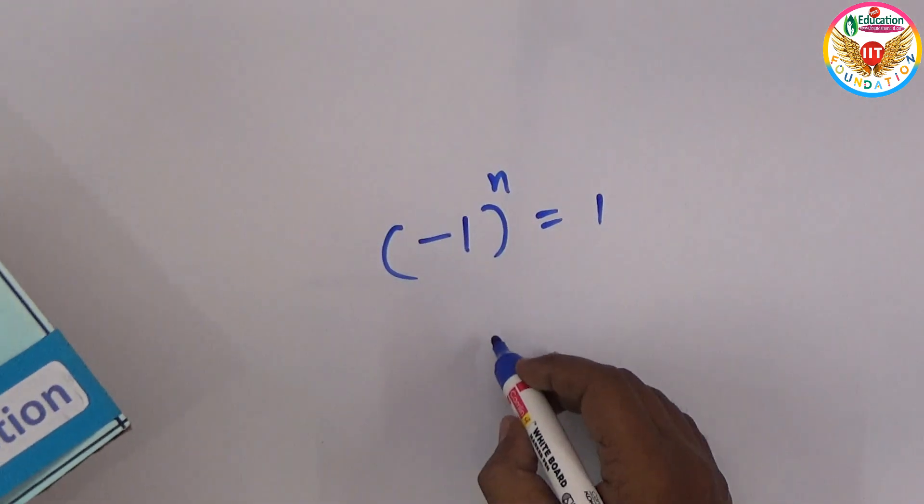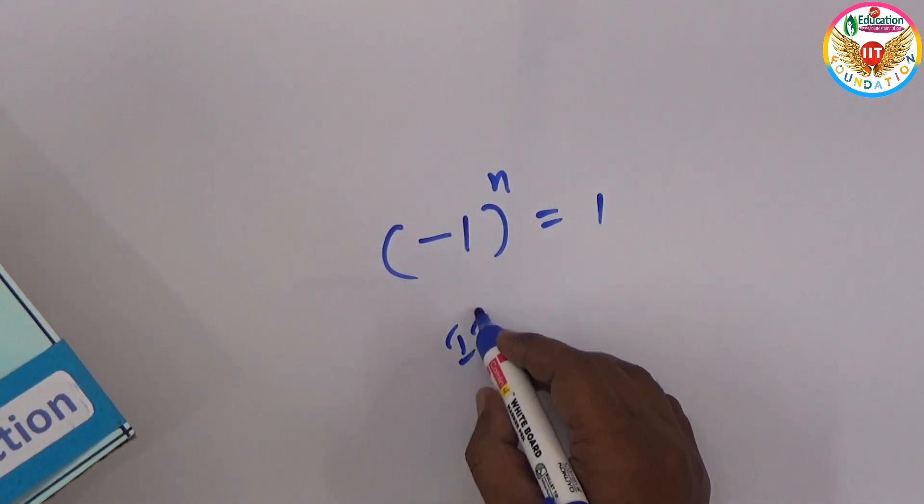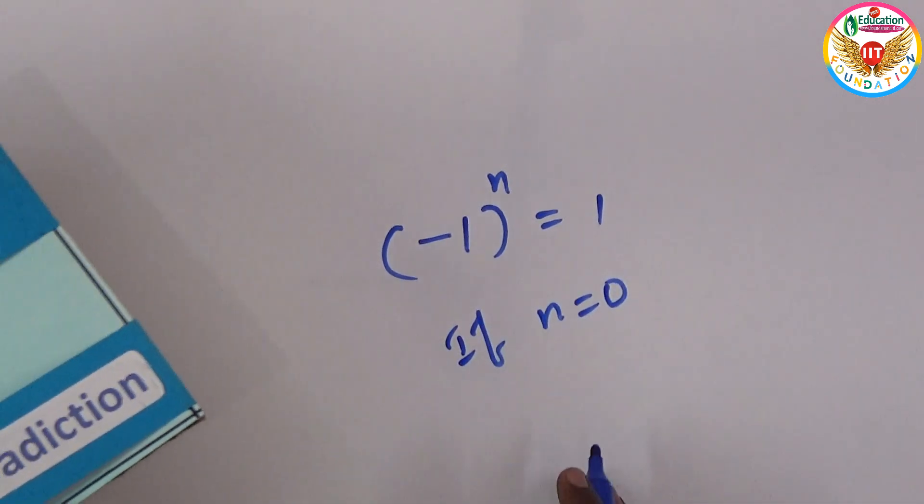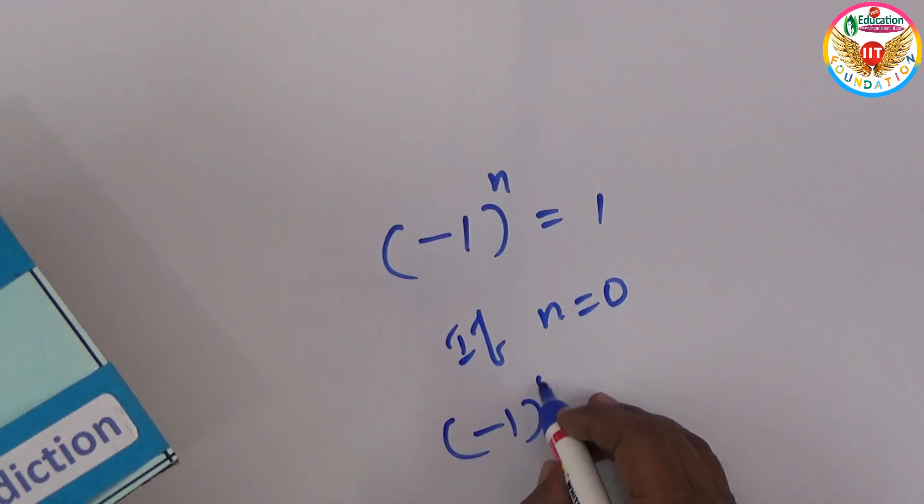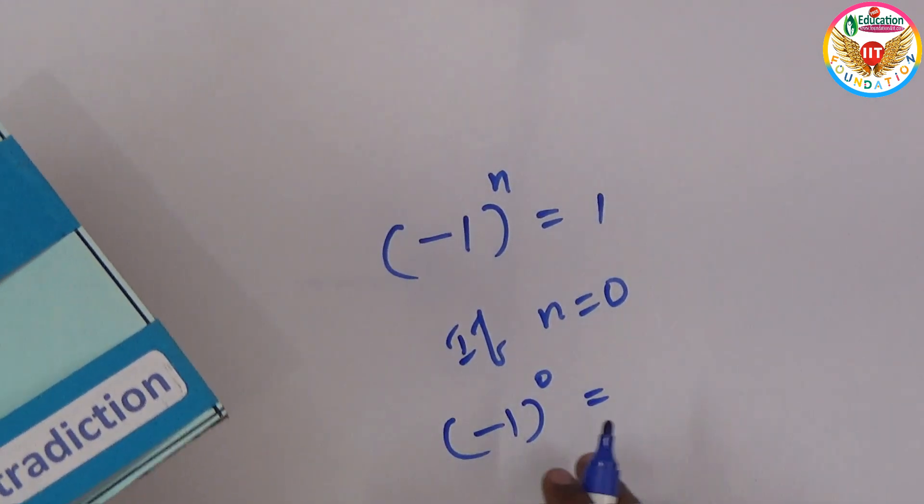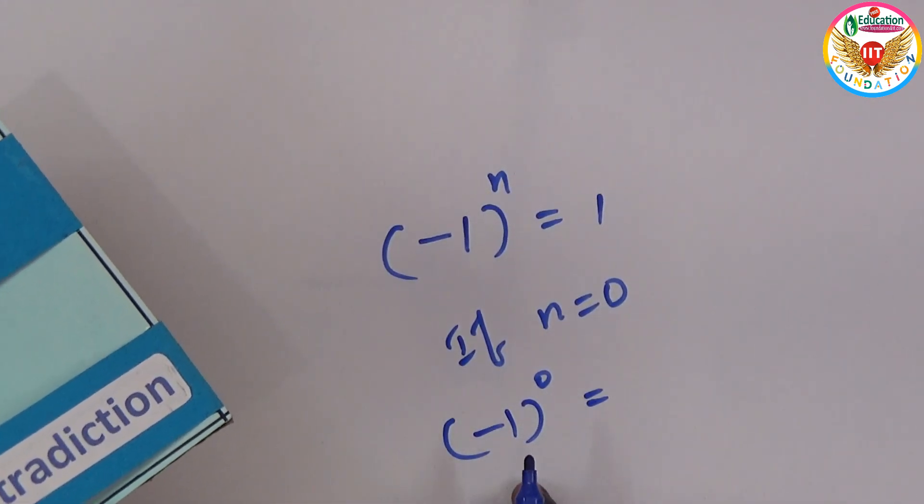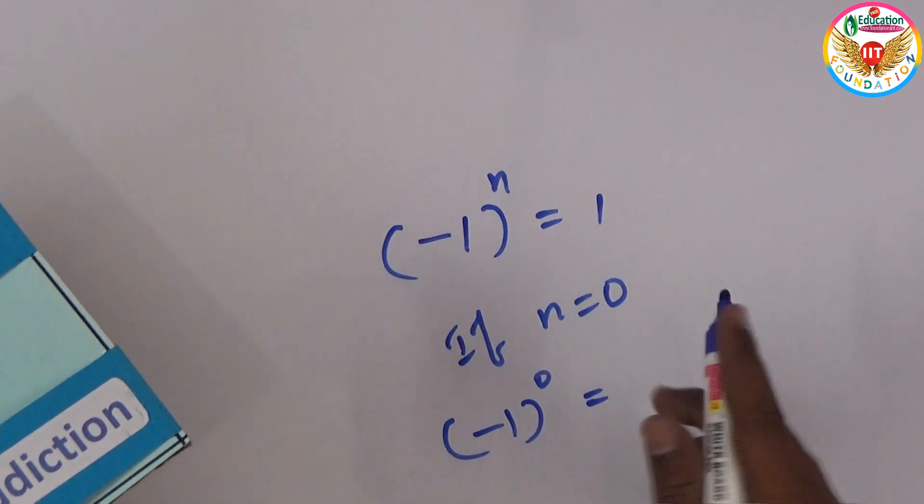So let's say if n equals zero. Now take this: minus one to the power zero. Generally, we know that any number, except zero, to the power zero is one.